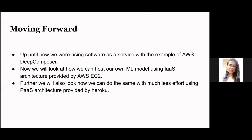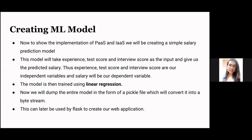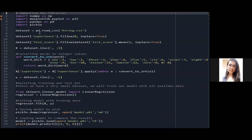Up until now, we were using Software as a Service with the example of AWS Deep Composer. Now we'll look at how to host our ML model using IaaS architecture provided by AWS EC2, and also how to do the same with less effort using PaaS architecture provided by Heroku. The ML model we are creating is a simple salary prediction model. It takes experience, test score, and interview score as inputs — the independent variables — and gives a predicted salary as the dependent variable. The model is trained using linear regression, with some modifications to the dataset. Using the pickle library, we dump the entire model into a .pkl file, converting it into a byte stream.